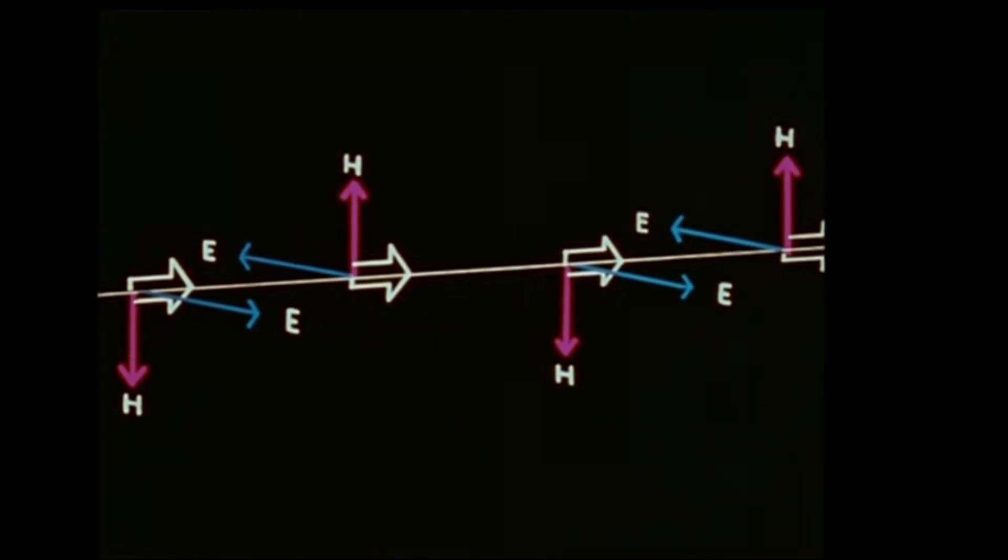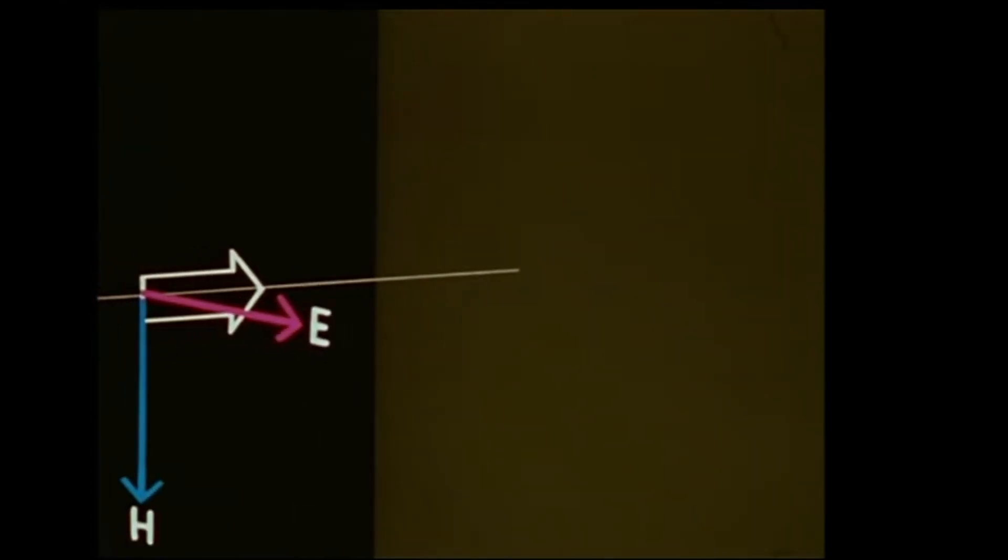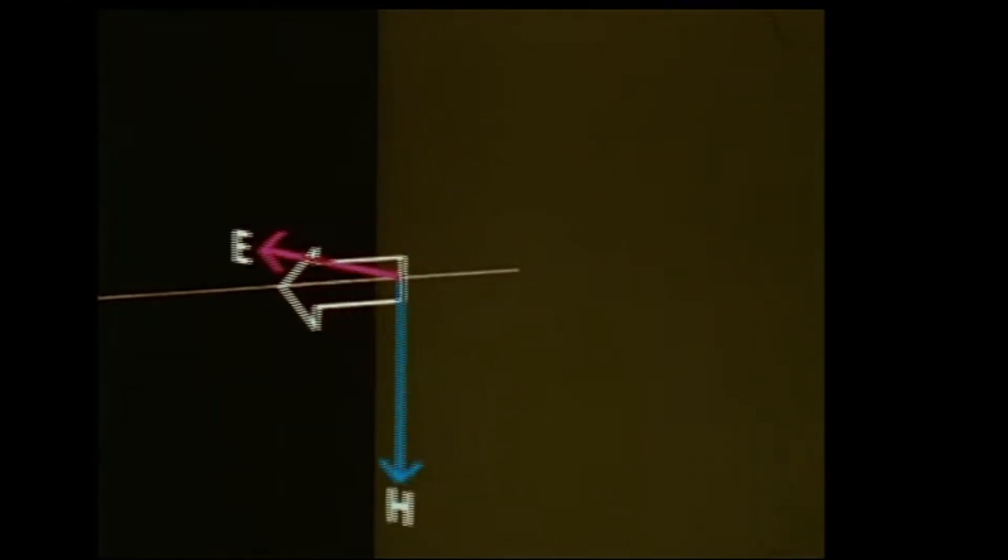Let us now consider what happens when the wave strikes a reflecting surface. We will consider only one pair of the peak vectors. As before, Poynting's rule gives the direction of propagation. On reaching the reflector, the E field is reversed, but the direction of the H field is unchanged. By Poynting's rule, the direction vector is therefore reversed. The same process occurs for each successive pair of vectors. The direction of propagation thus reverses when the wave strikes a plane surface.